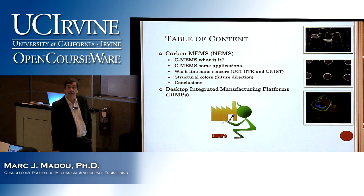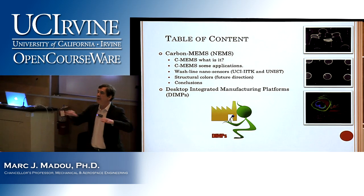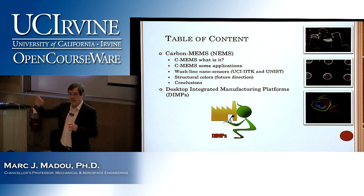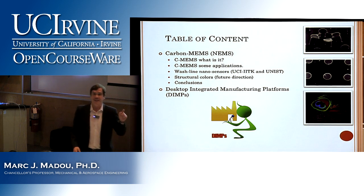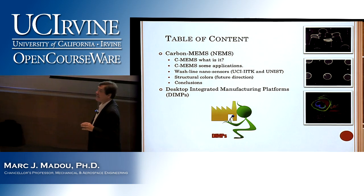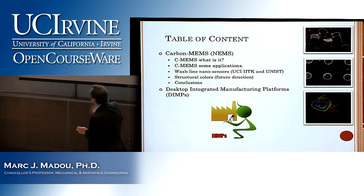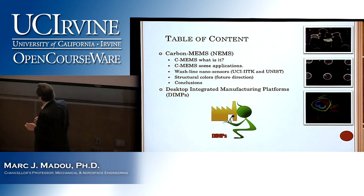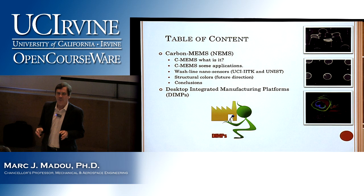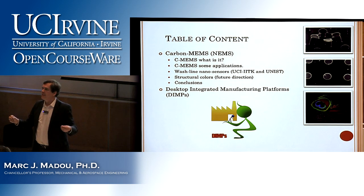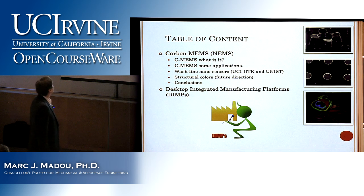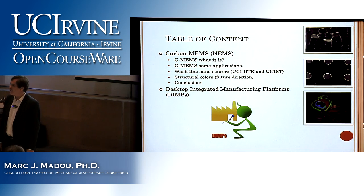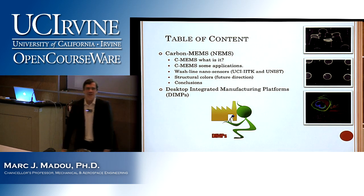I will tell you what Carbon MEMS is, then after 14–15 years, how many applications have come out — including a micro-battery company, Innovate, just off campus. Then the key new application: wash line nanosensors, which I'm doing here at UC Irvine, in collaboration with IIT Kanpur in India and UNIST in Korea. Very recently we found that this manufacturing technique could be a new approach to making structural colors.